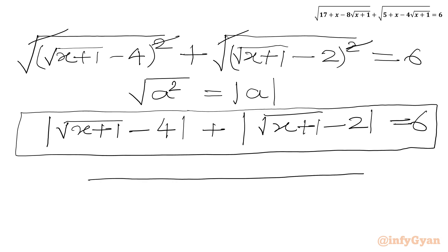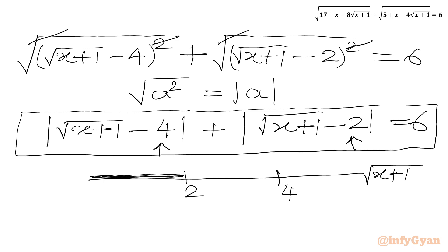We draw a number line where we place square root of x plus 1, and we have two key points: 2 and 4. We will deal with three segments: first where square root of x plus 1 is less than 2; second where square root of x plus 1 lies in the interval 2 to 4; and third where square root of x plus 1 is greater than 4.